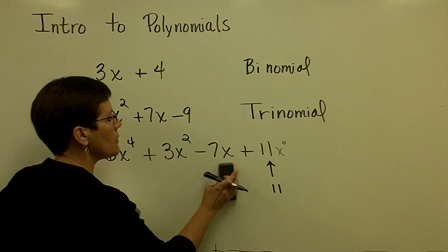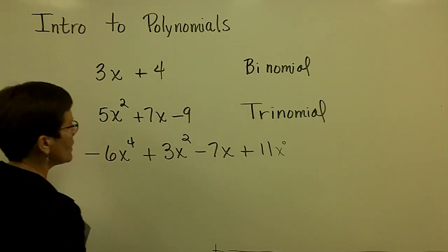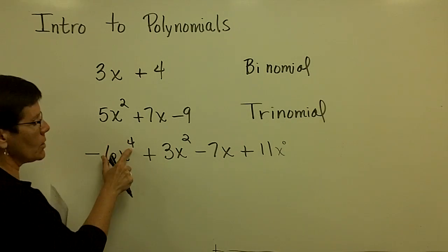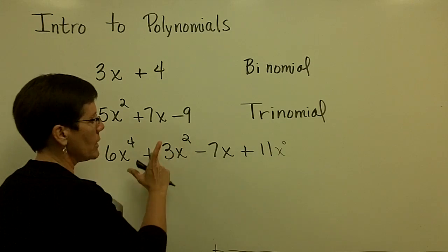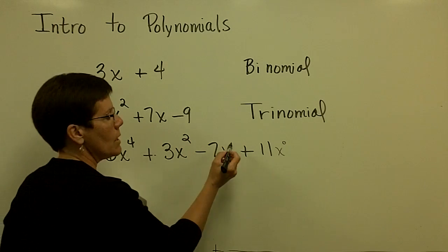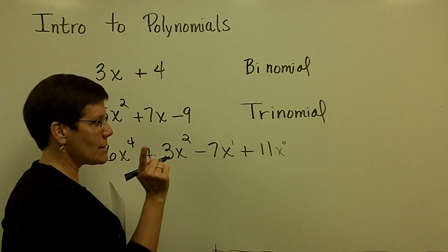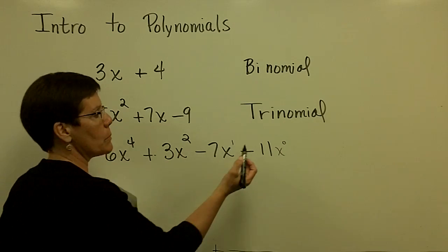The degree of each term, the degree of this term right here is 4. The degree of this term is 2. The degree of this term is a 1. So as you can see, it's the exponent on the variable.